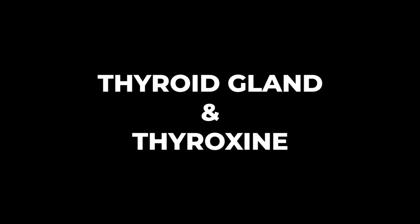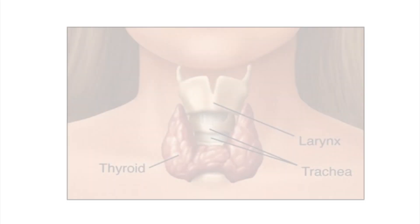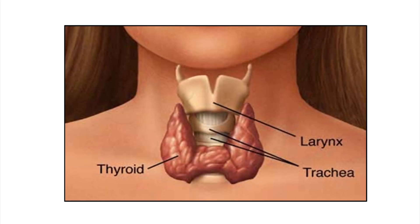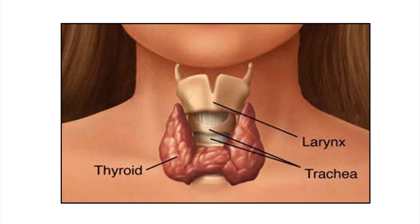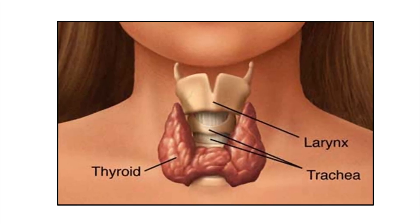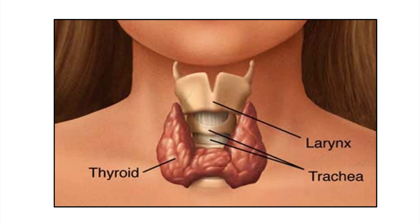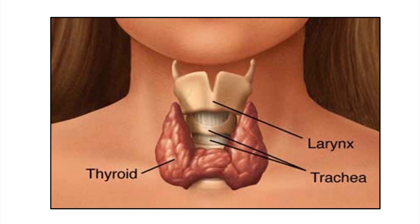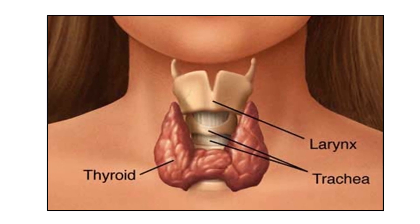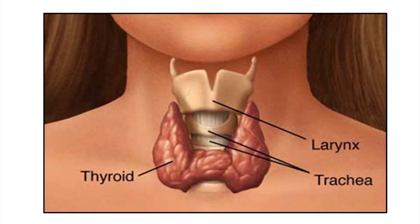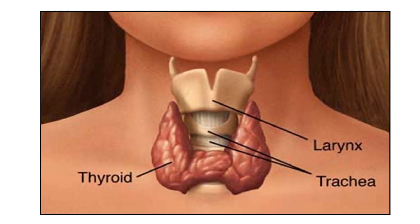Let us know about the thyroid gland and thyroxin. The thyroid gland consists of a pair of lobes which lie on either side of the larynx in the neck region.